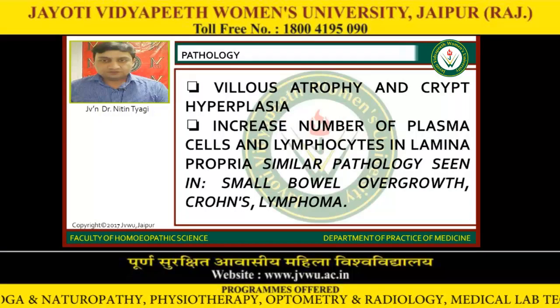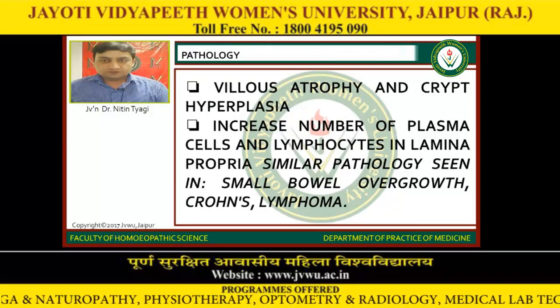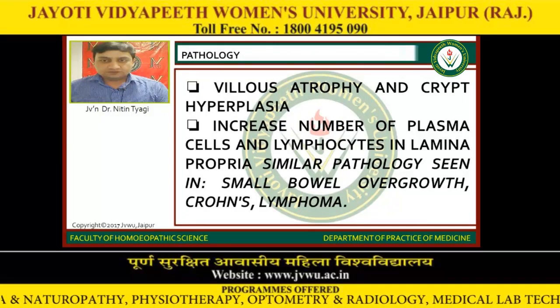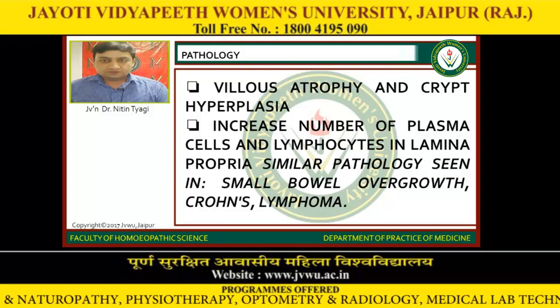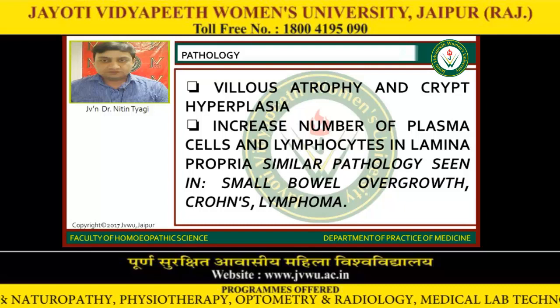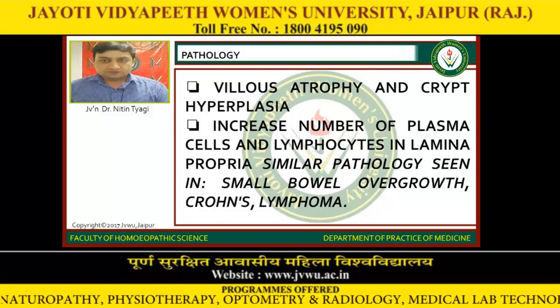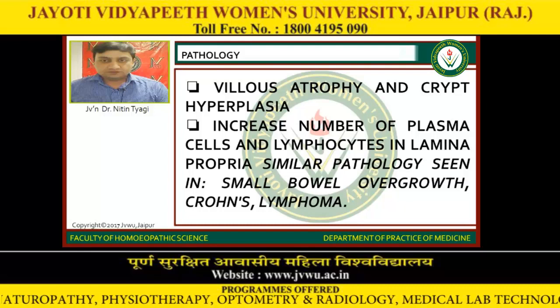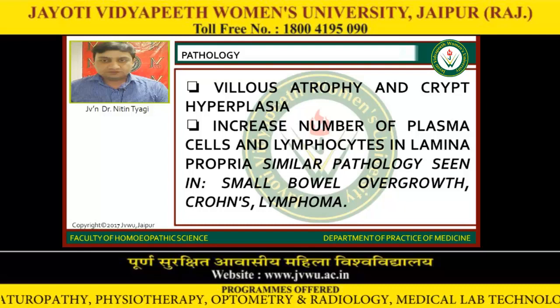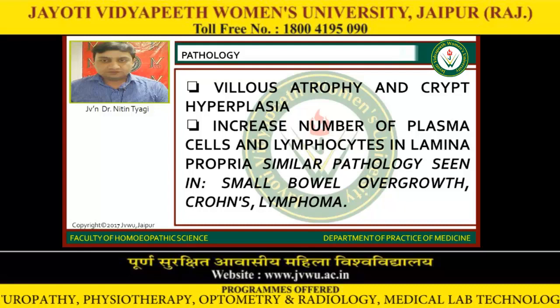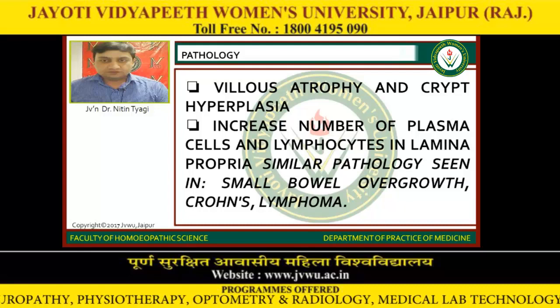Pathology: there is villus atrophy and crypt hyperplasia. There is an increase in the number of plasma cells and lymphocytes in the lamina propria. Similar pathology is seen in small bowel overgrowth, Crohn's disease, or lymphomas.